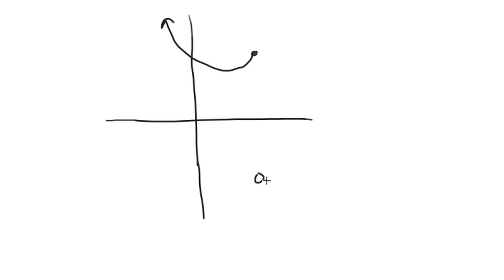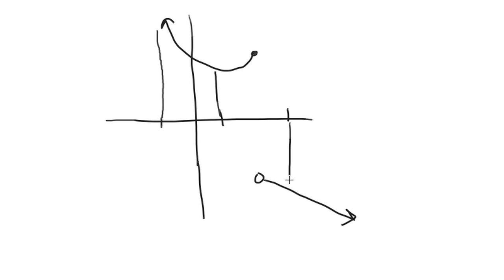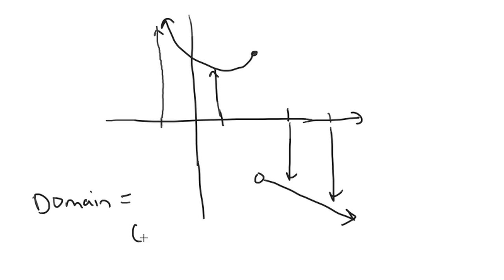Let's draw this a little better. So that's the parabola — that's what the graph of f looks like. The domain is the values of x for which you get an output value. Graphically, I look on the x-axis at points that correspond to a point on the graph. We see that every point on the x-axis has a corresponding point, so the domain is all real numbers — in interval notation, minus infinity to infinity.